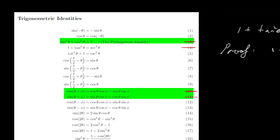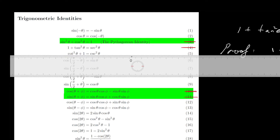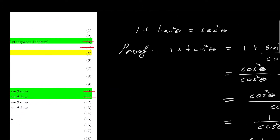Hello everyone, welcome to my new video in my mathematics essential series. In this video, I will continue proving trigonometric identities. In particular, I will prove identity number 5 on our list of 19 identities. Just like in the previous video, I will show you two proofs of this identity — one is more common, but the less common proof is quicker. So let's get to it.